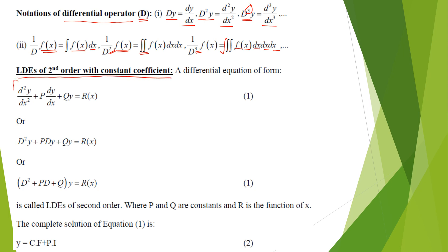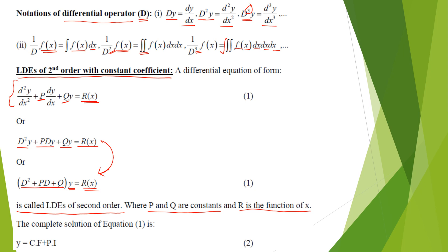The linear differential equation of second order with constant coefficients is written as d²y/dx² + p·dy/dx + qy = R, where R is a function of x. Using the differential operator, this becomes (D² + pD + q)y = R, where p and q are constants and R is a function of x.